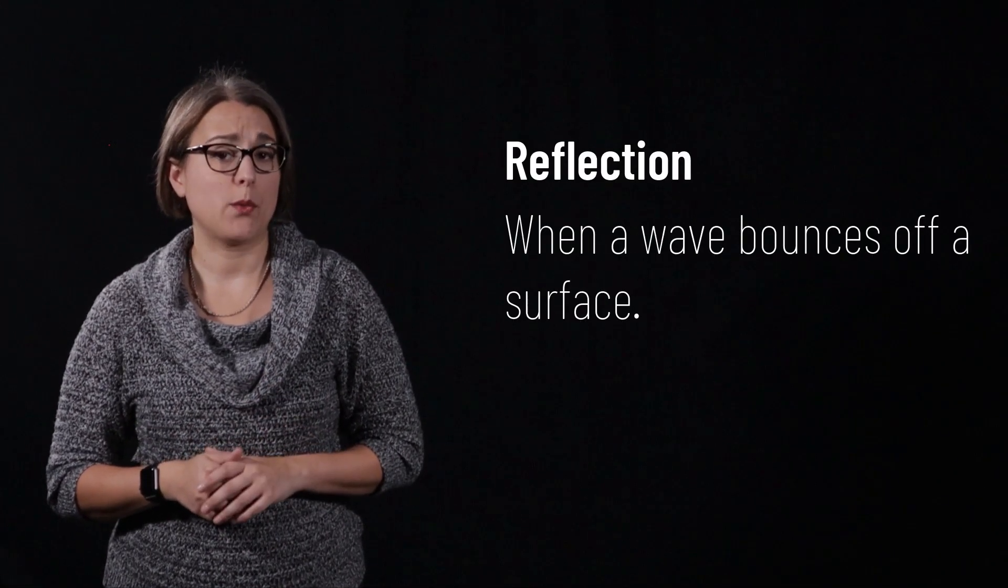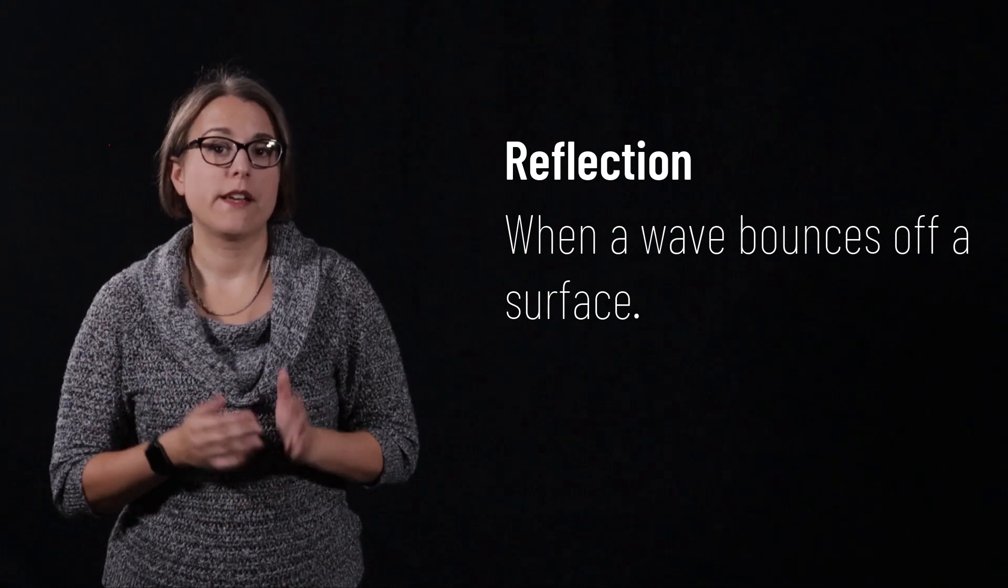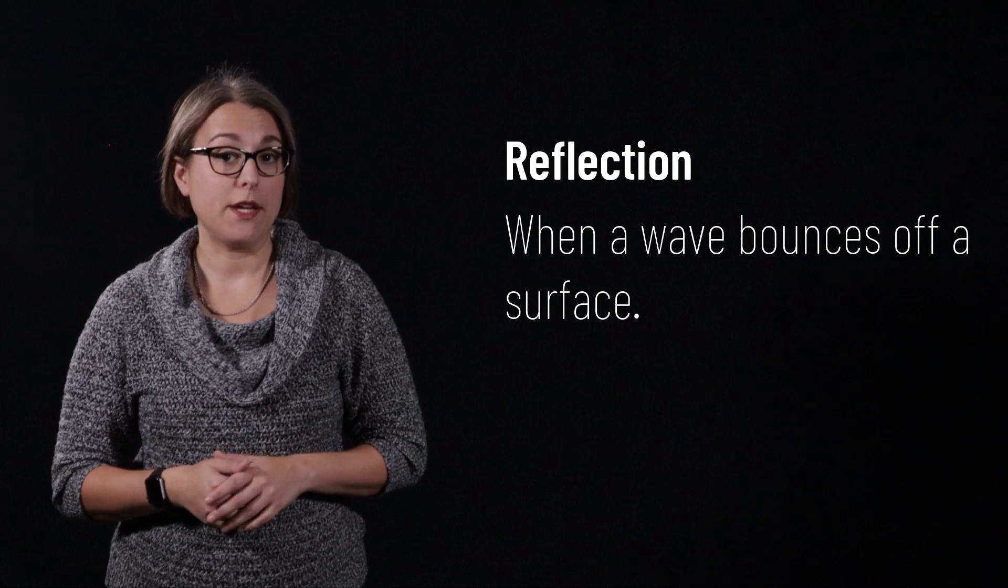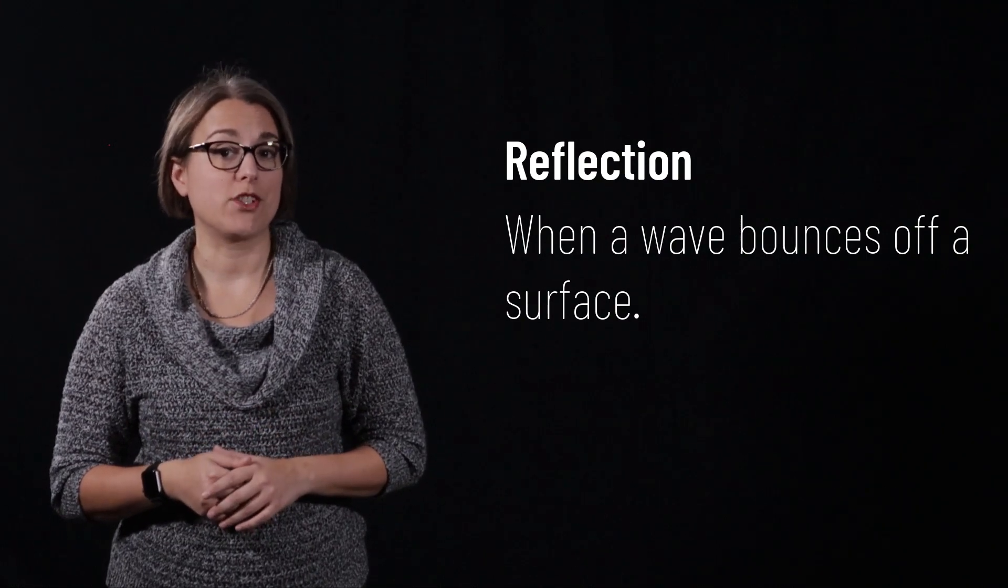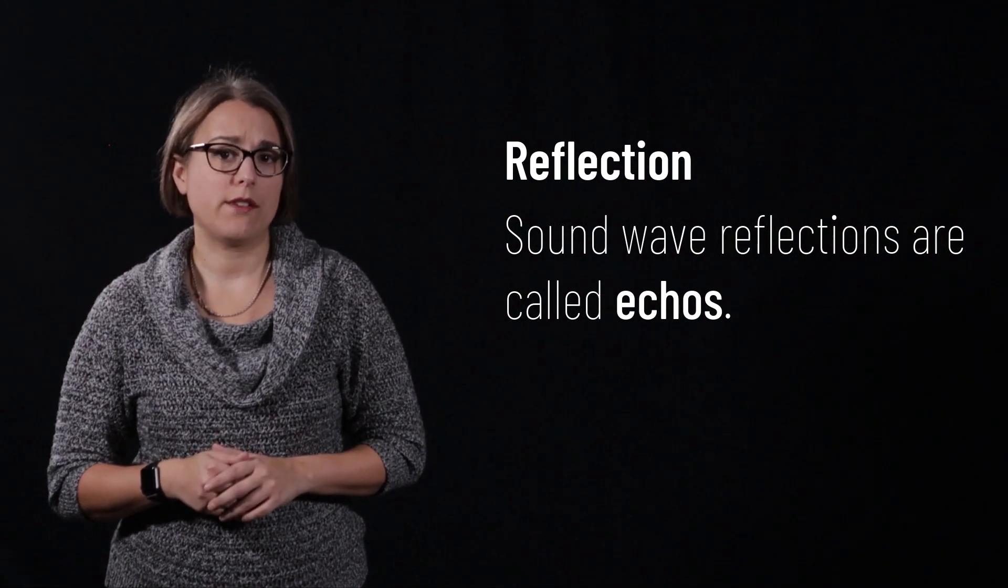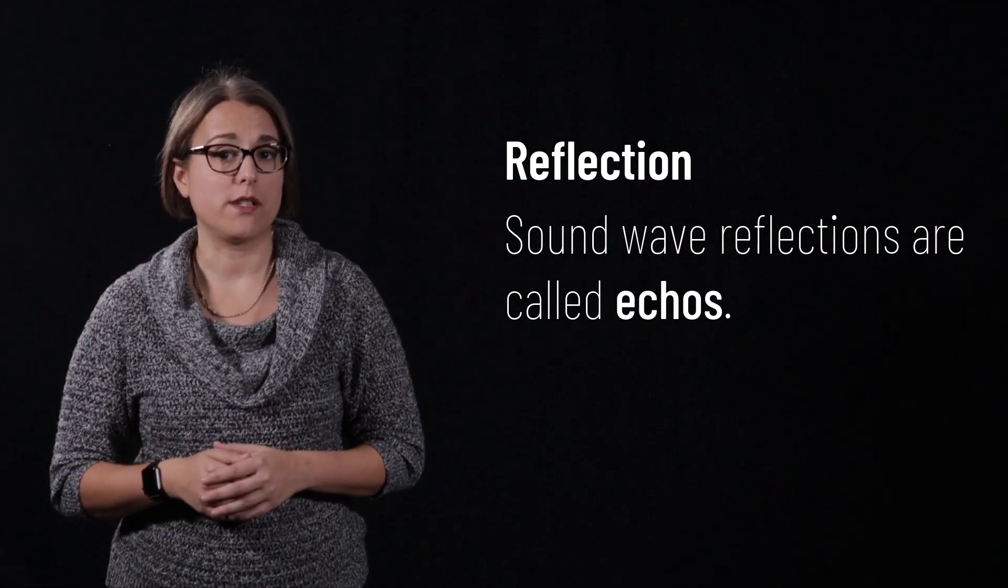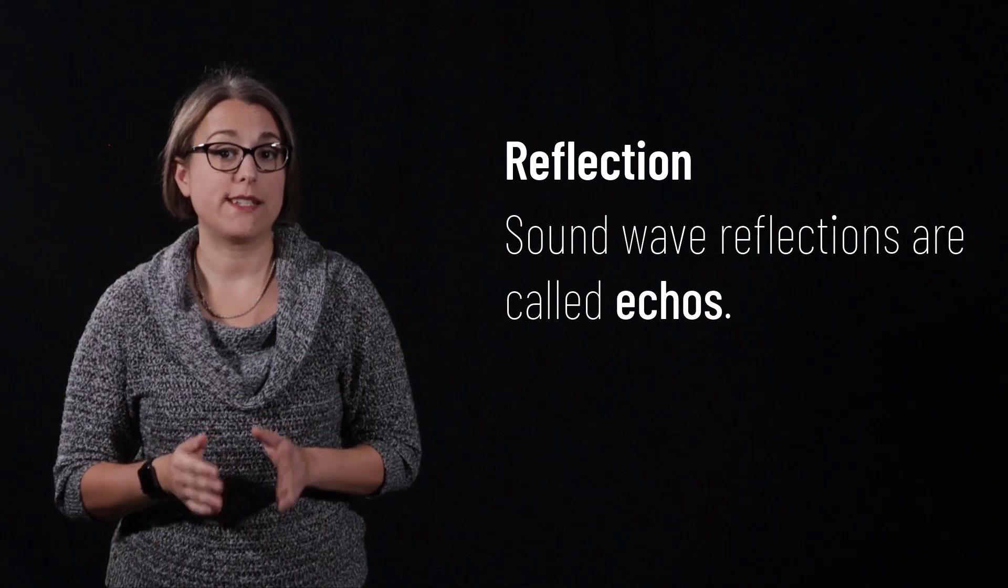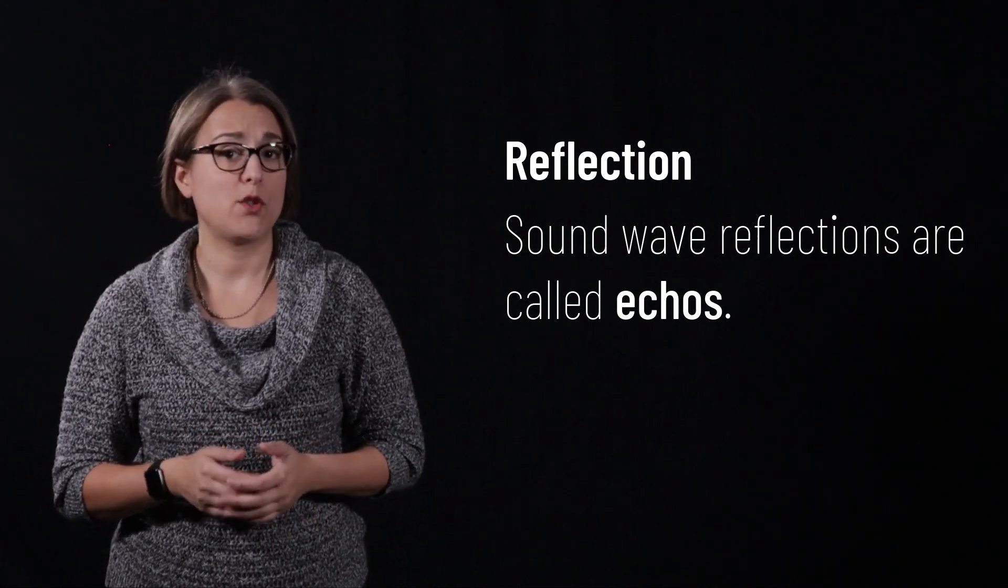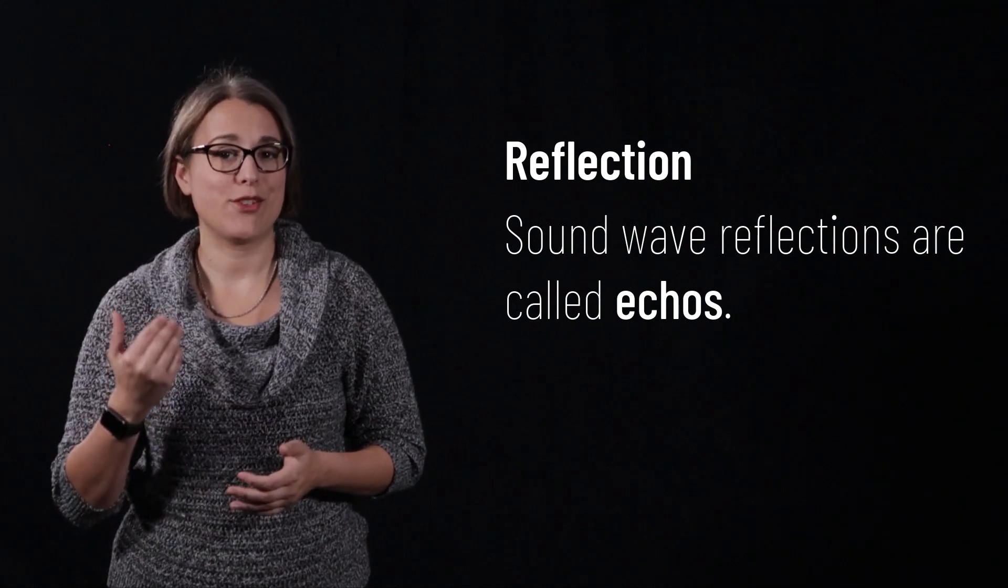When waves travel, they can change their motion and properties in different ways. One thing that can happen with waves is called reflection. This occurs when waves bounce off of a surface. If you've looked in a mirror, you've experienced the reflection of light waves. Sound waves can reflect as well. When discussing sound waves, a reflection is sometimes called an echo, especially when a sound wave reflects off of a surface that is far away, causing a delay between the initial sound source and the reflected wave.